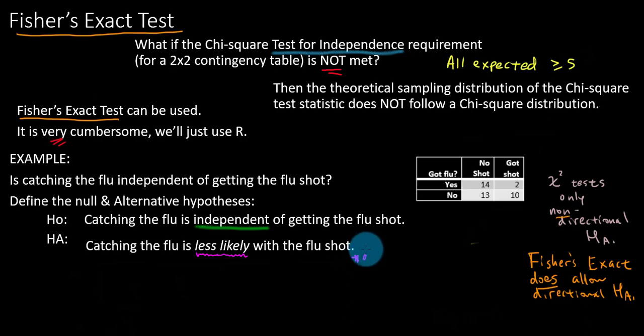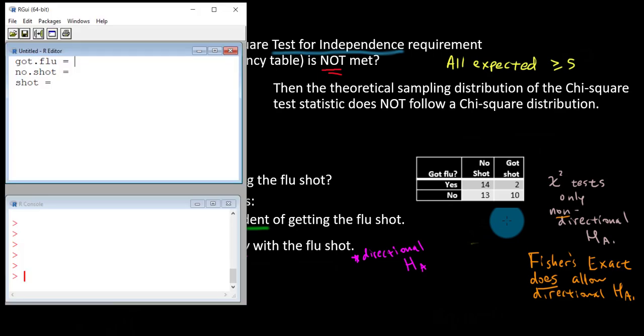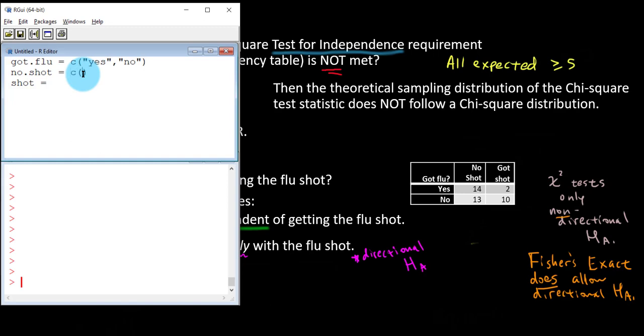So this is the point in which I would usually run through the process of the test statistic p-value. But we're just going to go right into R. So I'm going to need to transcribe this data frame into R. I've got R open and I've started creating vectors. We're going to need three vectors if I want to create this entire complete data frame. The first vector, got flu, is actually only a text vector where I need entries for yes and no. Because they are text, I need to put them in quotations.